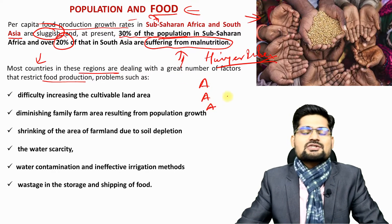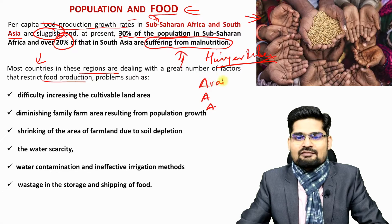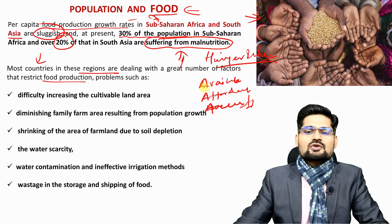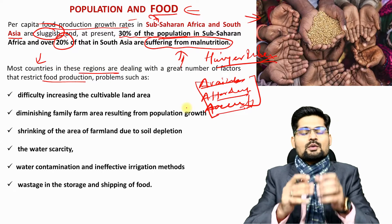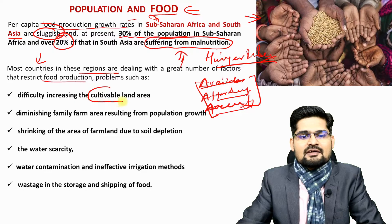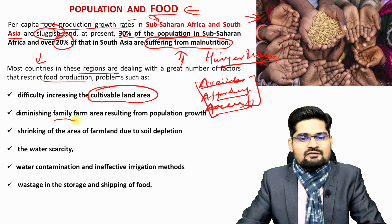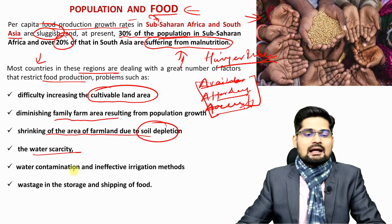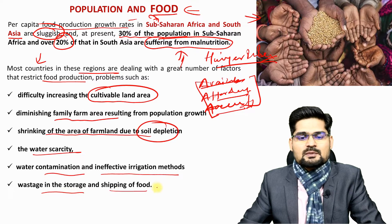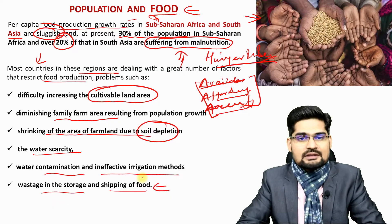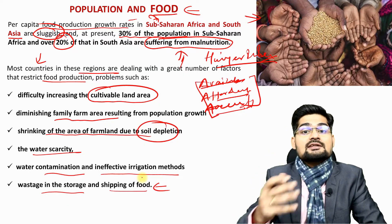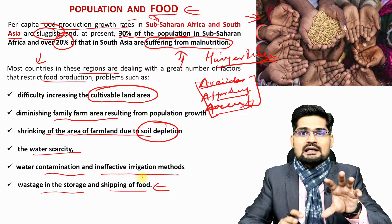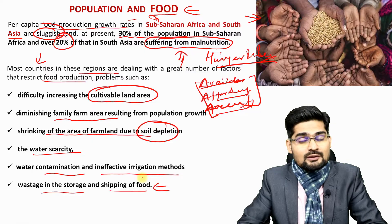The 3A concept comes into the picture: availability, affordability, and accessibility — these are the 3As which are important for food security. There is difficulty in increasing cultivable land areas which are being reduced, diminishing family farm area, shrinking farmland due to soil depletion, water scarcity, contamination, ineffective irrigation methods, and shipping food problems. Food is not reaching where it needs to reach — even if available, it's not accessible, and even if accessible, it's not affordable for many. Poverty and food combined together with population has to be looked at in the picture.